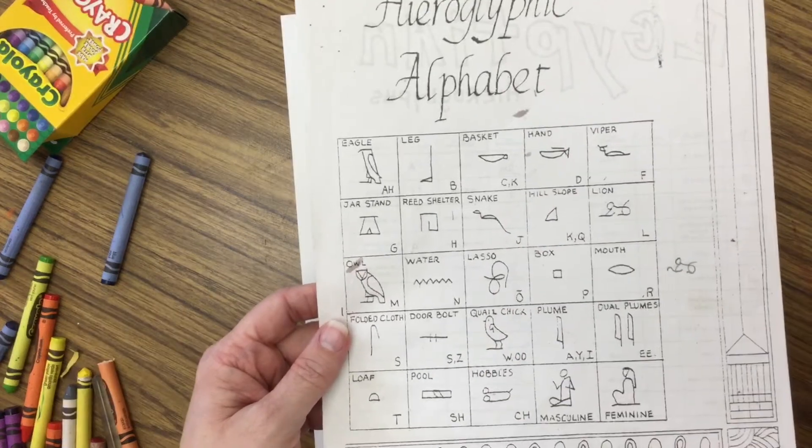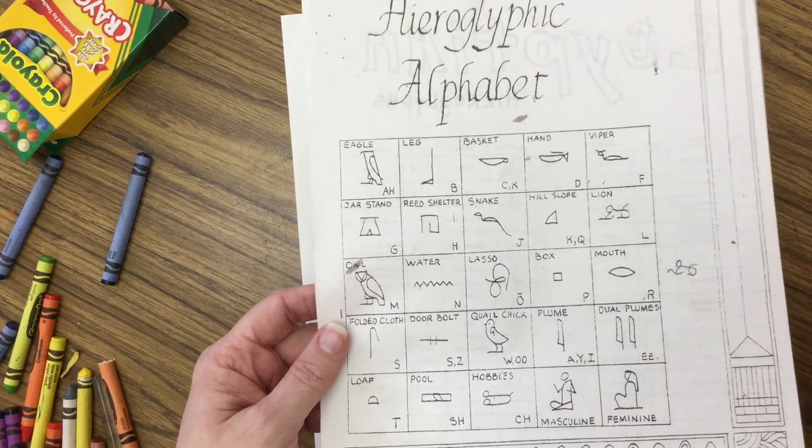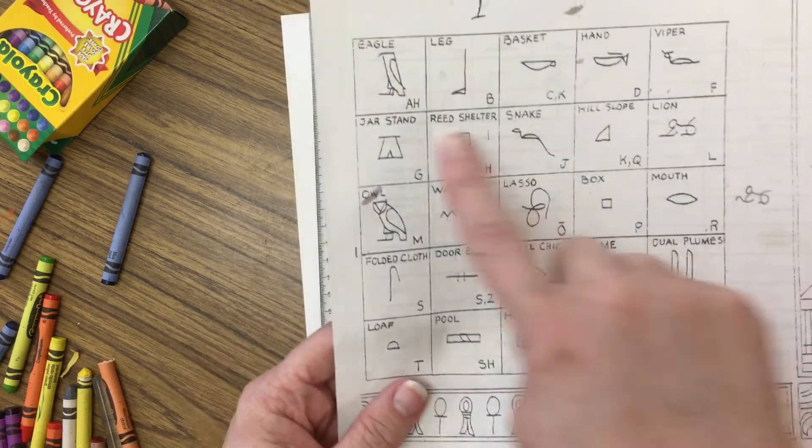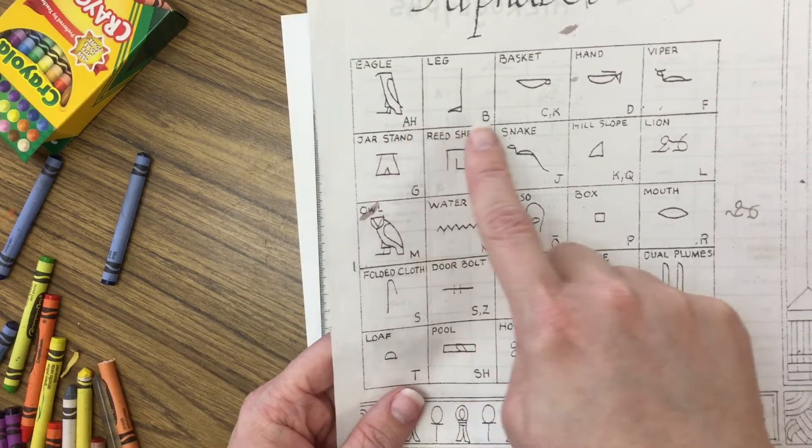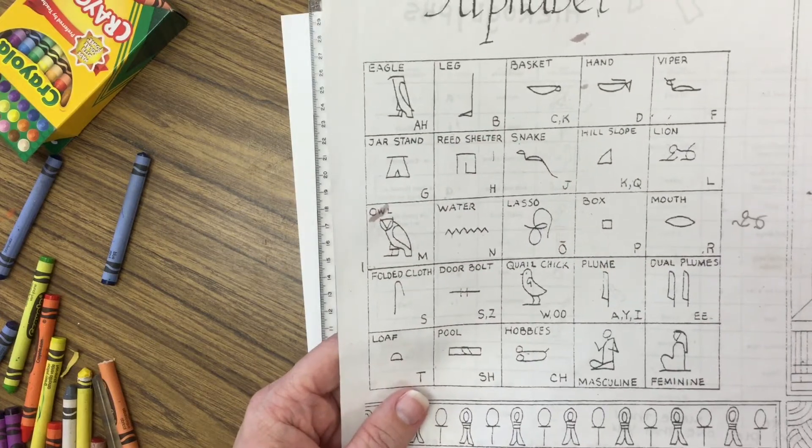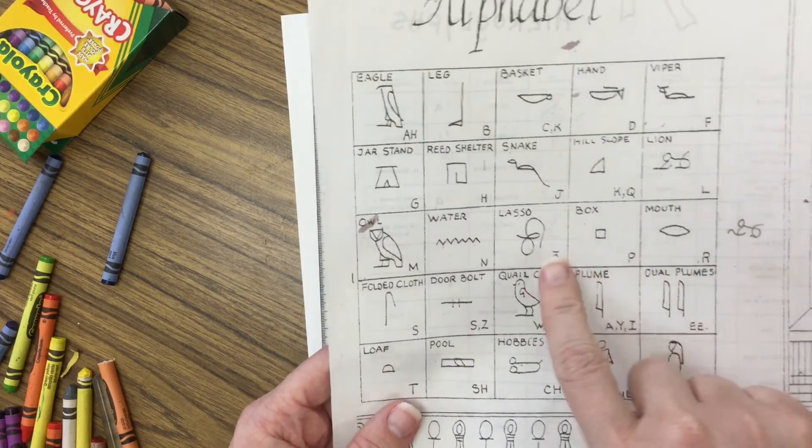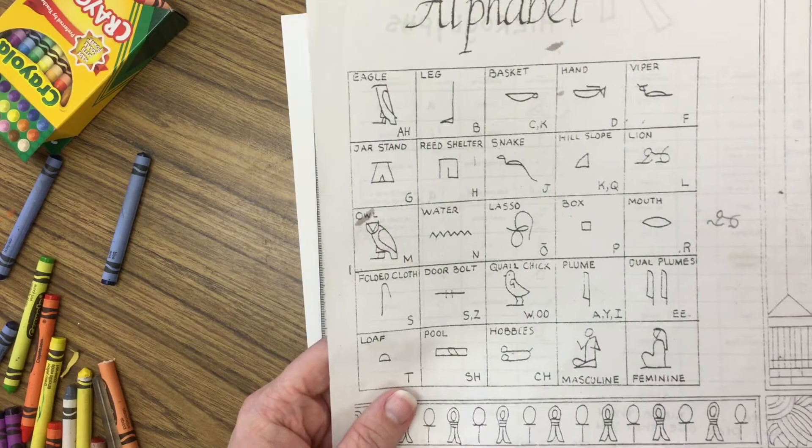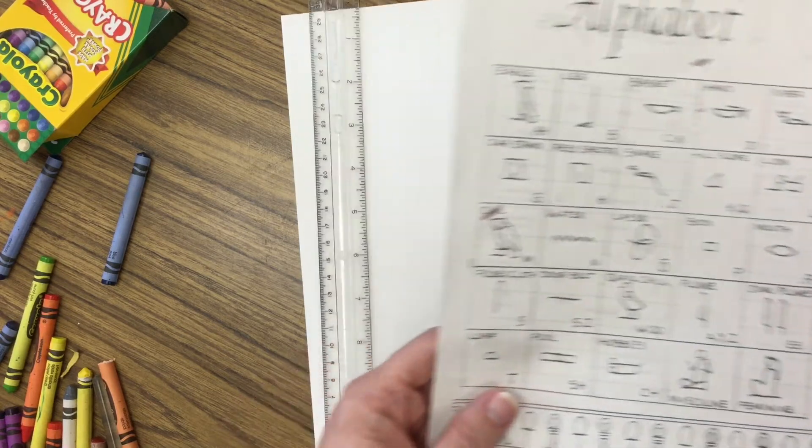You will be having some hieroglyph sheets. If you're at home it'll be on Seesaw. If you're at school I'm going to have some handouts for you to look at. On these hieroglyph sheets you will notice that there are symbols and then letters to go with them. The letters are the translation for the English sounds.